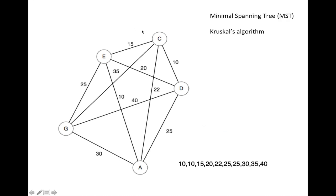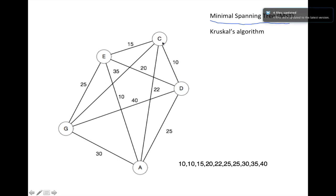The problem we're going to reduce it to — which is a much easier problem — is called the Minimal Spanning Tree problem. That's the problem of, given a graph with weights on the edges, finding the tree that connects all the nodes and has the minimal total edge weight. A tree simply means a graph that is without cycles.